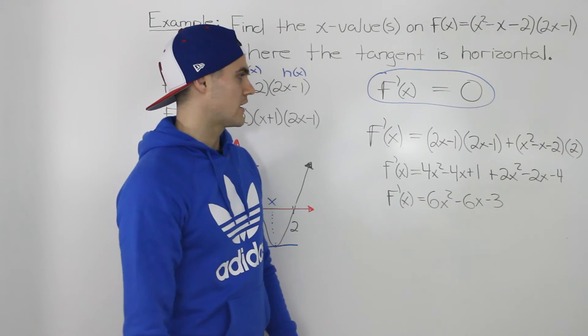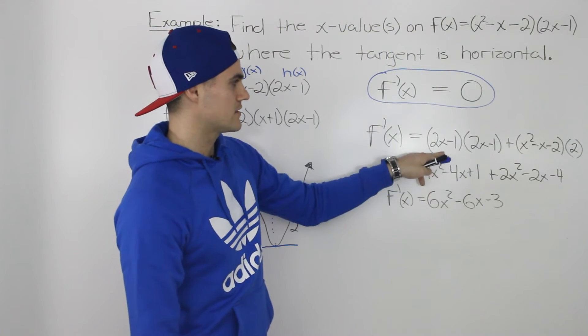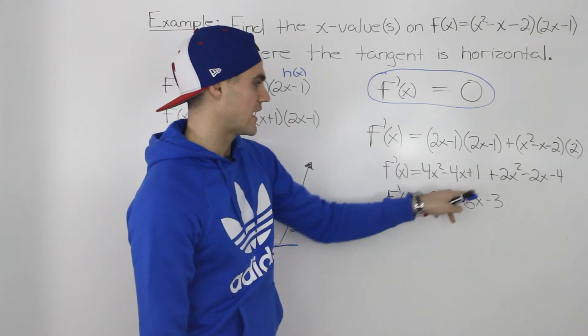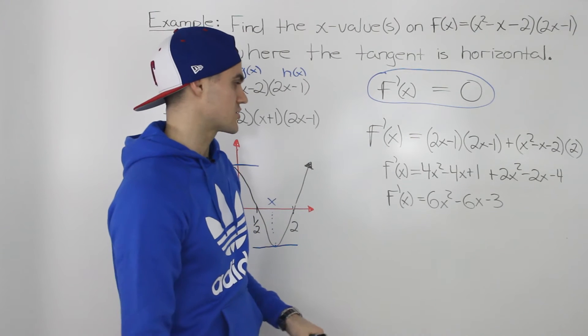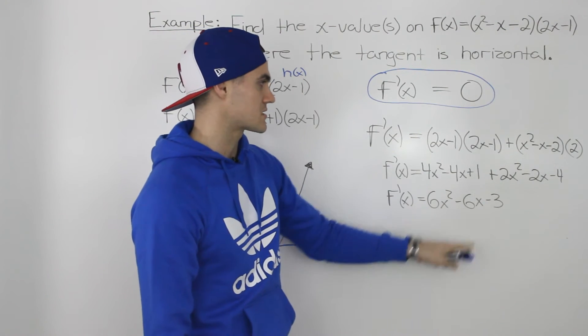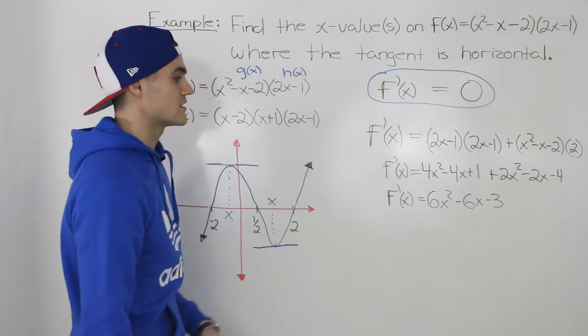So then simplifying that further, we would expand these two brackets and then distribute that to inside this bracket and we'd be left with that expression, and then simplifying the like terms, we would end up with a final derivative of 6x squared minus 6x minus 3 for this function.